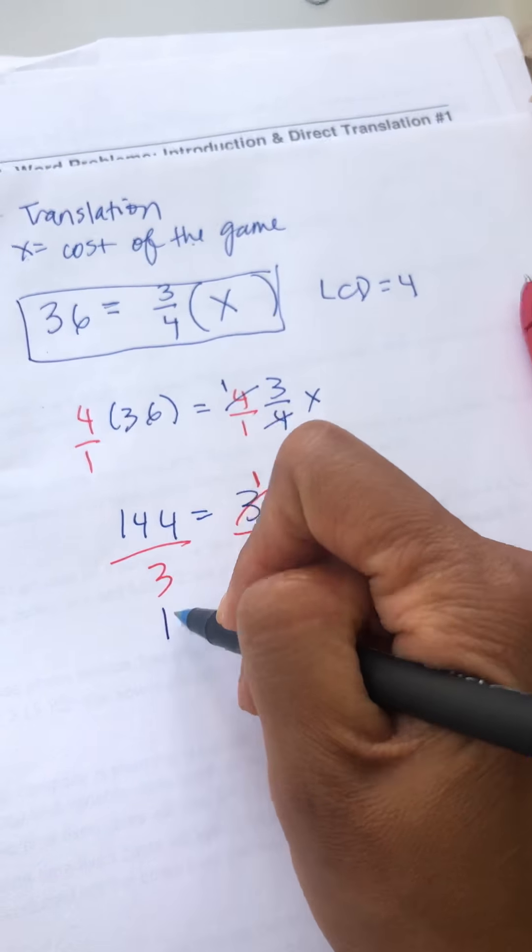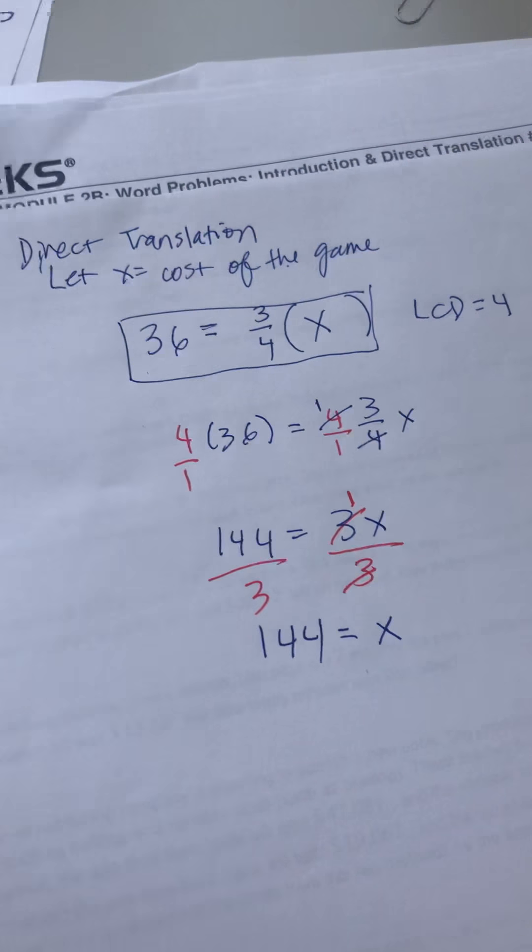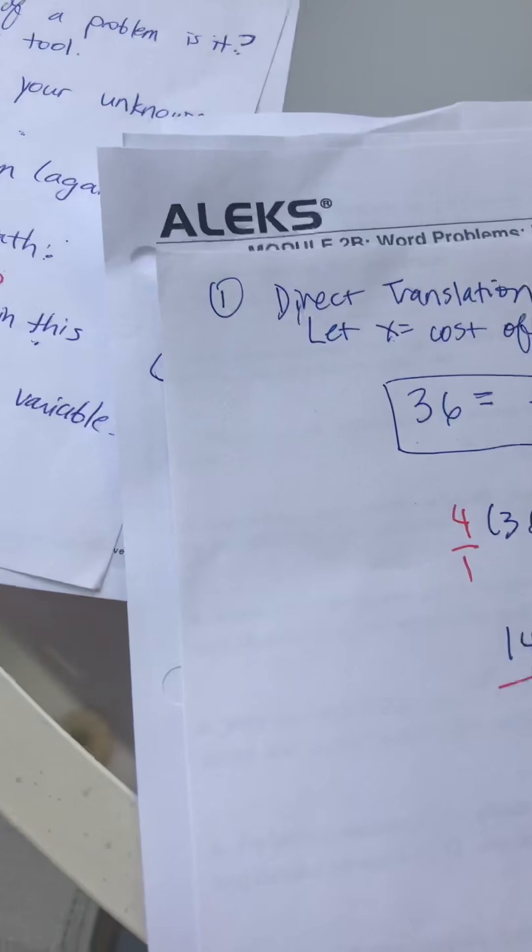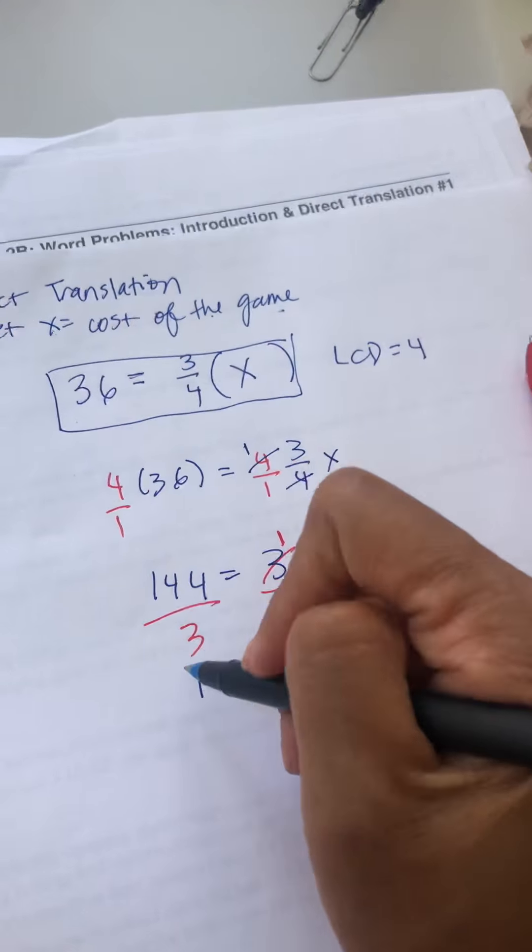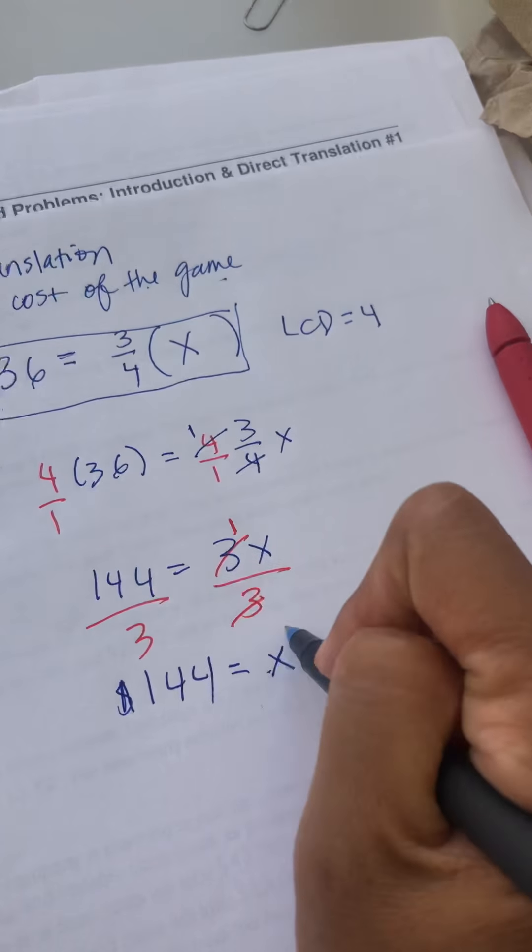Last step: answer the question, include units. So what is x? Good thing I wrote here x is the total cost of the game, so I need to put a dollar sign right there.